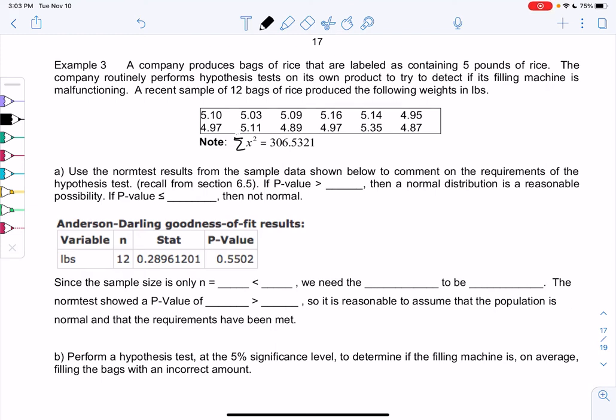Section 9.3, example three. A company produces bags of rice that are labeled as containing five pounds of rice. That sounds like a claim value, right? They claim it's five pounds. The company routinely performs hypothesis tests on its own product to detect if its filling machine is malfunctioning. A recent sample of 12 bags of rice included the following weights in pounds.